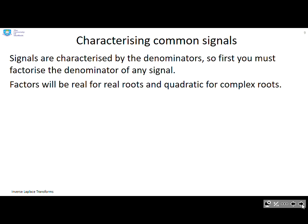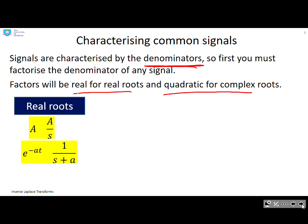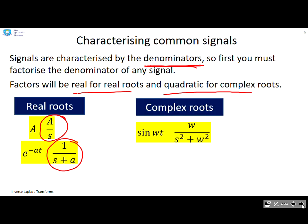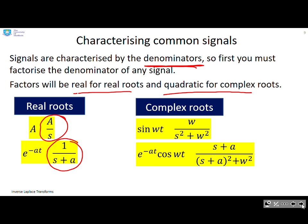Characterising common signals: signals are characterised by their denominators — that's the key point. You must factorise the denominator of any signal. Real roots correspond to things like a constant (a over s, with a real root at zero) or an exponential (1 over (s + a), with a real root at minus a). Complex roots correspond to things like sine — with s² + ω², whose roots are ±jω — or e to the minus at cos(ωt), where the roots are −a ± jω. In this course we won't discuss repeated roots, but you may cover that in mathematics.